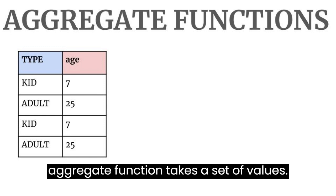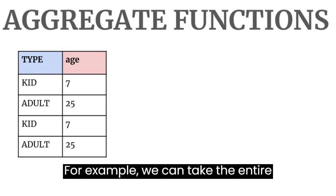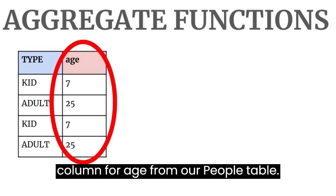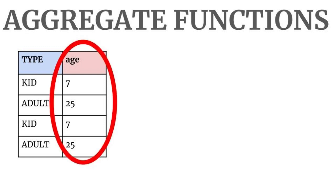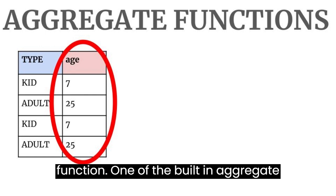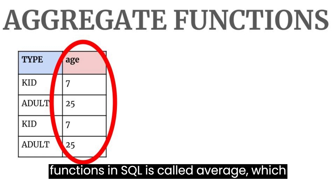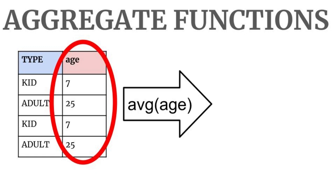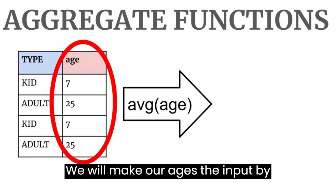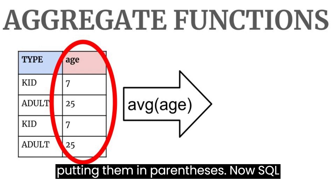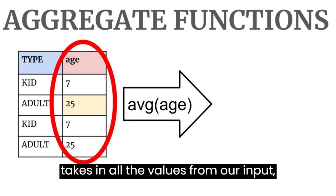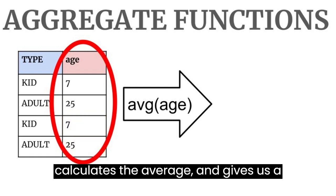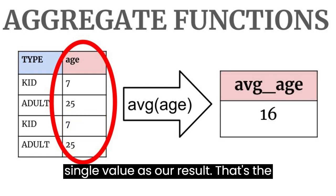An aggregate function takes a set of values. For example, we can take the entire column for age from our people table. That will be our input to our aggregate function. One of the built-in aggregate functions in SQL is called Average, written simply as AVG. We will make our ages the input by putting them in parentheses. Now SQL takes in all the values from our input, calculates the average, and gives us a single value as our result.